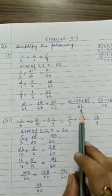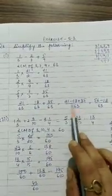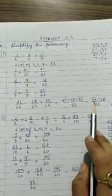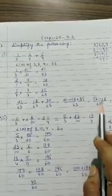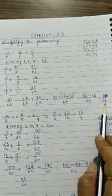Now write all these numbers: 21/63 minus 18/63 plus 35/63. Take the LCM, it is 63 because the denominator is same. So 21 minus 18 plus 35. 21 plus 35 is 56 minus 18. 56 minus 18 is 38/63.